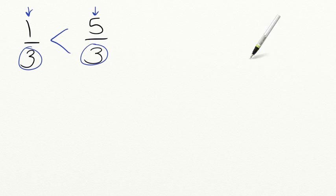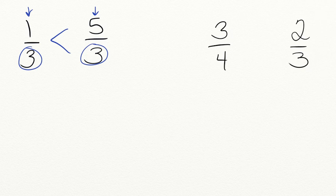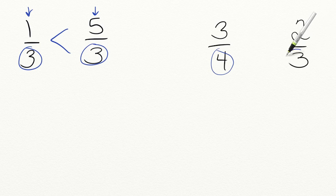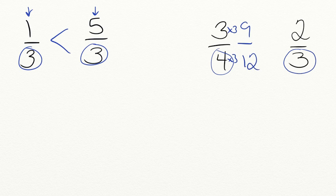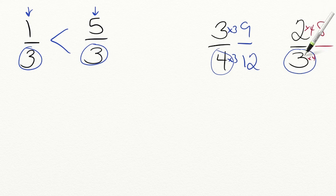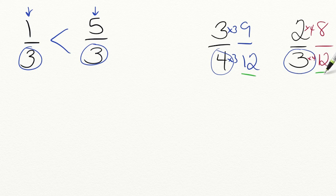Let's try another problem. Can you compare three-fourths and two-thirds? Our denominators are different, so we need to find a common denominator. We multiply the numerator and denominator of three-fourths by three: three times three equals nine and four times three equals twelve. Then we multiply two-thirds by four: two times four equals eight and three times four equals twelve. Now we compare — nine-twelfths is greater than eight-twelfths.